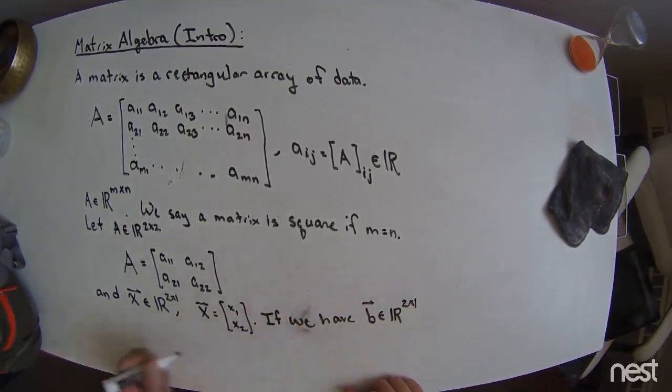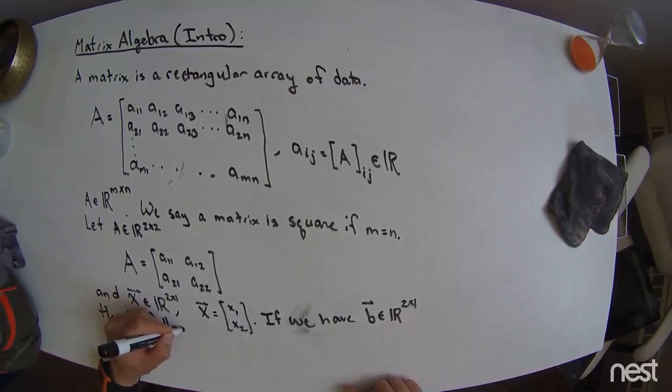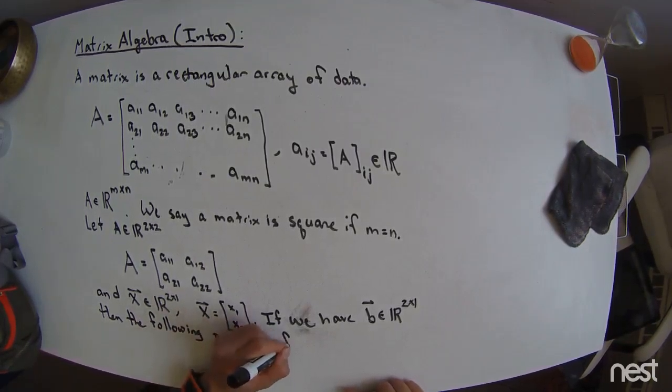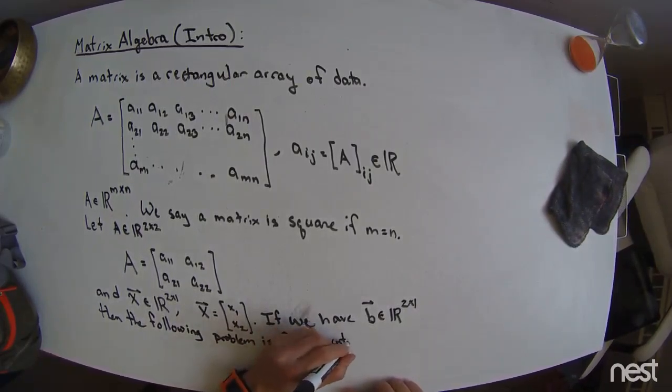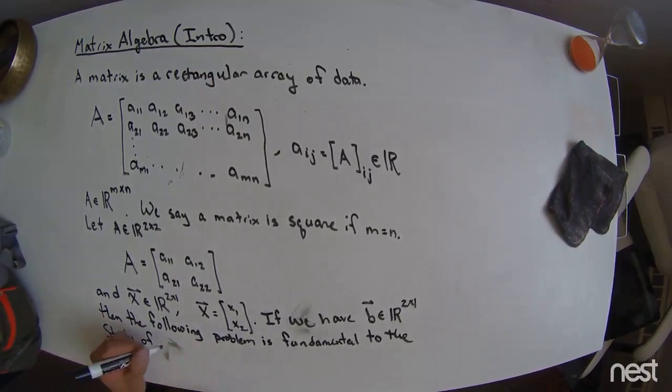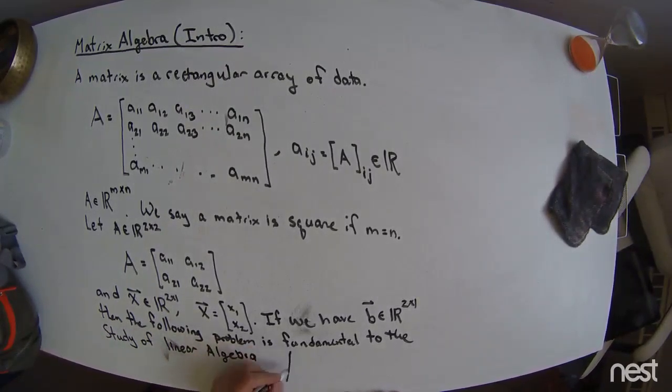So let's say if we have B, which is an R 2 by 1, then the following problem is fundamental to the study of linear algebra. And that problem that we're going to look at is the problem A times X is equal to B.